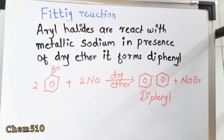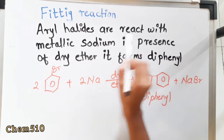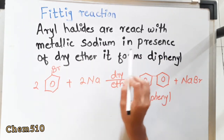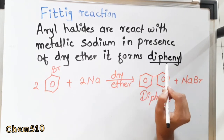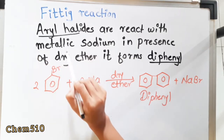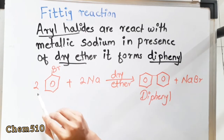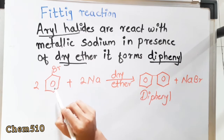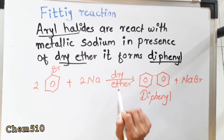In the Wurtz reaction, alkyl halides convert into alkanes, but in the Fittig reaction, aryl halides are converted into diphenyls. The statement of the Fittig reaction is: aryl halides react with metallic sodium in the presence of dry ether to form diphenyl. The product is diphenyl, the reactant is aryl halide, and dry ether is the catalyst. The reaction is: 2 bromobenzene + 2Na → diphenyl, in the presence of dry ether, with NaBr as a byproduct.